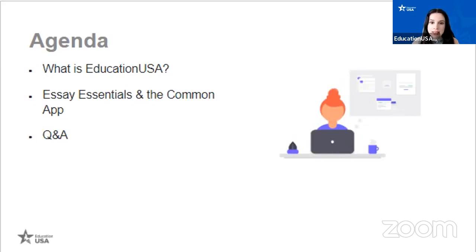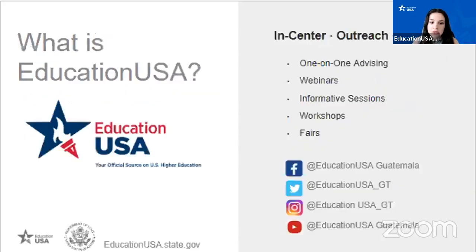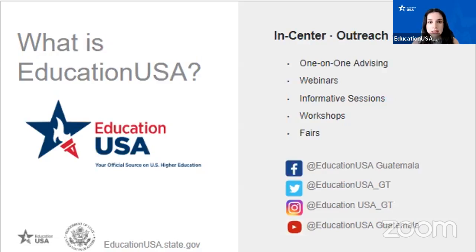EducationUSA is the official source of information regarding U.S. higher education. We are a network of more than 400 advising centers around the world. Here in Guatemala, our advising center is based at IGA, our only American-Guatemalan binational center in the country. We focus on providing guidance, resources, and helpful recommendations to students who are looking at studying at the higher education level in the U.S.